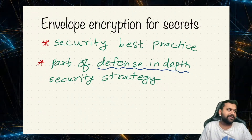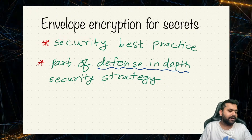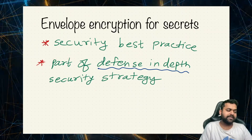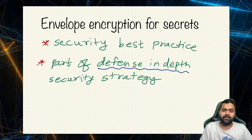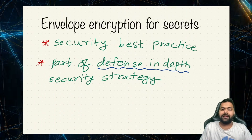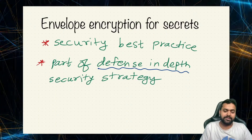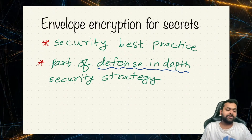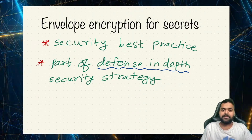So what is this envelope encryption and why is it being used? One of the key things is it is a security best practice to have one more additional layer of security, and it is also part of the defense in depth security strategy. Defense in depth means having more and more layers of security such that if one layer gets exploited, another layer will be there to protect it. You can read more about the defense in depth strategy — I think it's defined by the security agency of the United States.